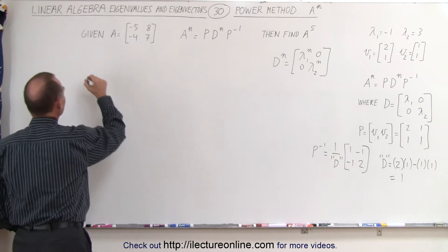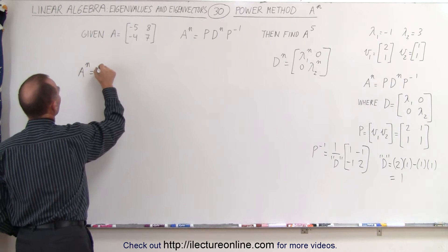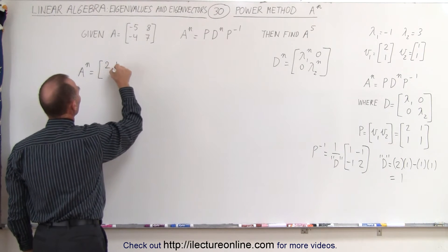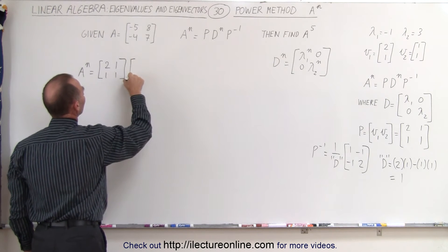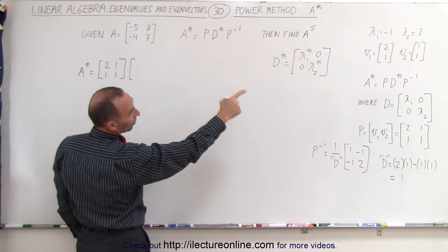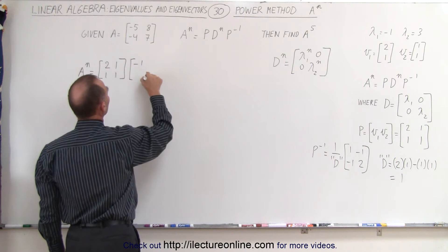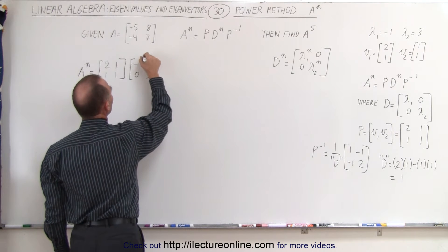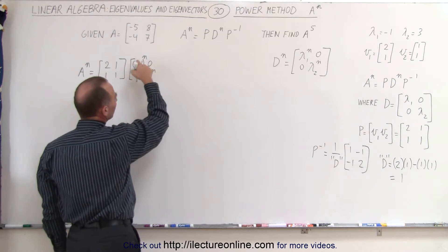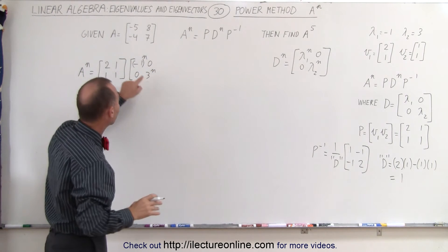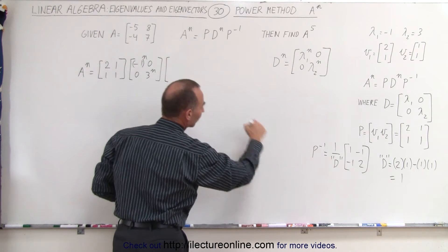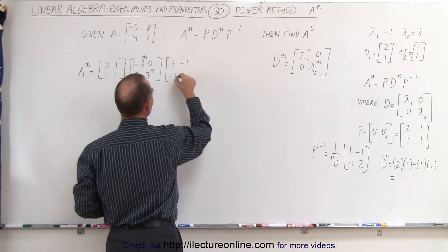That means A to the nth power is equal to the P matrix — which is 2, 1, 1, 1 — multiplied by the diagonalized matrix to the nth power. The diagonal elements are negative 1 and 3, each raised to the nth power. Then we multiply that times P inverse: 1, negative 1, negative 1, 2.